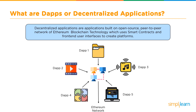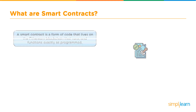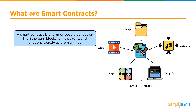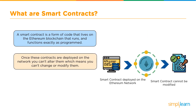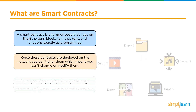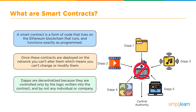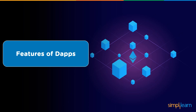In terms of user experience, dApps appear similar to other web applications, but they have a lot of differences. A smart contract is a form of code that lives on the Ethereum blockchain and runs exactly as programmed, quite similarly to normal contracts. Once these contracts are deployed on the network, you cannot alter them — you can't modify or change them. dApps are decentralized because they are controlled only by the logic written into the contract, not by any individual or company, which means you need to design your contracts very sensibly and carefully.